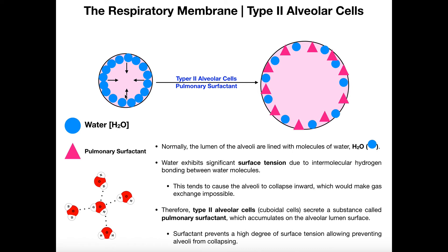So if you have a collapsed alveolus — or collectively the alveoli are collapsed — you're going to have insufficient gas exchange: getting rid of CO2 and taking in oxygen and delivering that to the blood. So having these water molecules that create surface tension is a big problem.